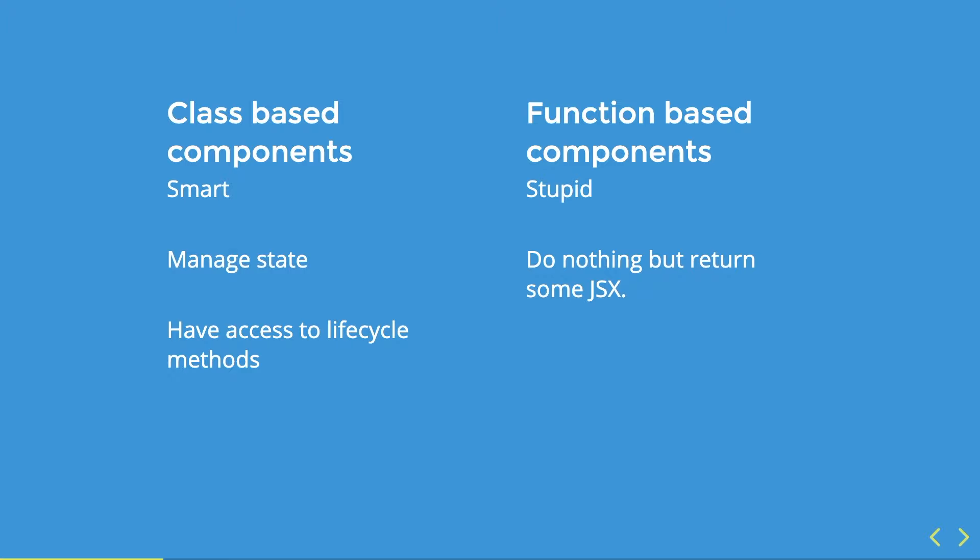Class-based components are smart — they offer state management and lifecycle methods. Function-based components on the other hand are quite limited; they practically don't do much other than return some JSX. Every time we write a functional component and figure that we might need to use state or lifecycle methods in it, we need to completely refactor it to a class-based component. Why isn't there a simpler way? Well, now there is.